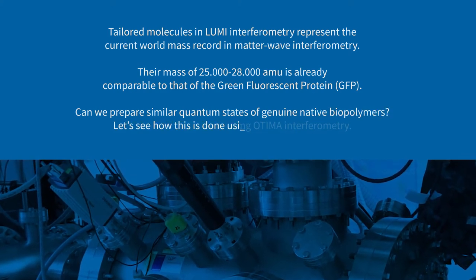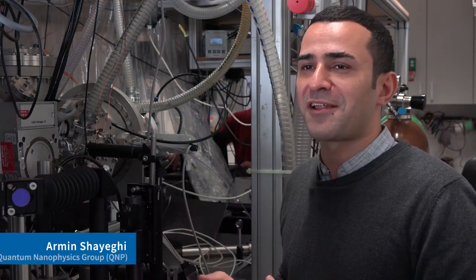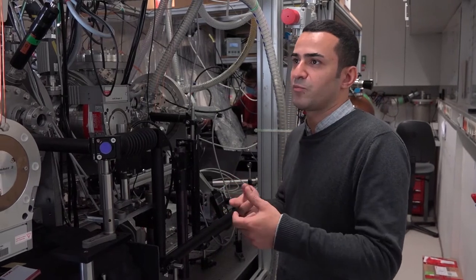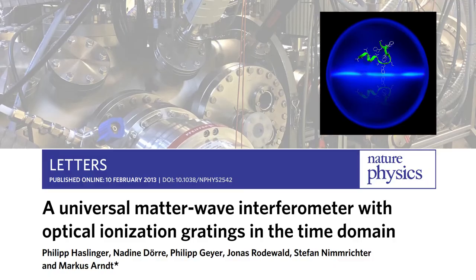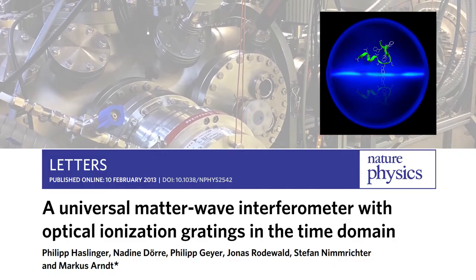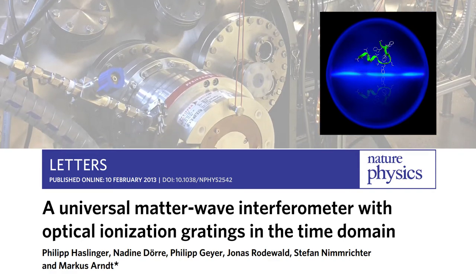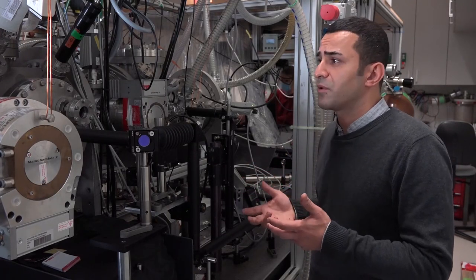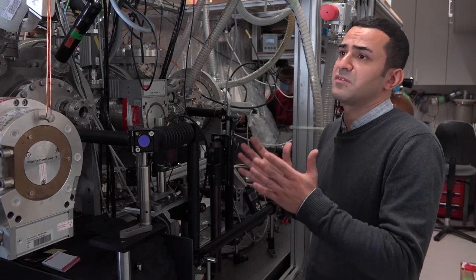But can we prepare similar quantum states of genuine native biopolymers? Let's see how this is done using OTIMA interferometry. OTIMA stands for Optical Time Domain Ionizing Matter Wave Interferometry. As in KDTLI and Lumi, OTIMA is a near-field interferometer that uses three gratings to prepare, manipulate and probe molecular coherence. But here we work with cutting-edge laser technology. The gratings in OTIMA are standing light waves made from 157 nanometer light with high enough photon energy to ionize a large variety of biomolecules and nanoparticles. Since the gratings in OTIMA are pulsed, OTIMA is a time domain interferometer, which means it is not the position of the gratings that have to be precisely defined, but the time of their appearance.